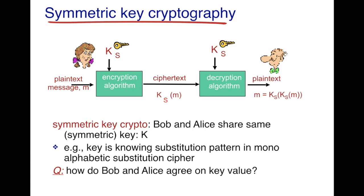Let's understand this with an example. The simplest cryptographic example is symmetric cryptography. In symmetric cryptography, both Alice and Bob share the same key, denoted by K_S. A big question that arises is how Bob and Alice agree upon a key value — we'll defer that discussion to a later video. Alice uses key K_S and the encryption algorithm on plain text M to generate cipher text K_S(M). When Bob receives it, he uses the same key K_S to regenerate the plain text M.